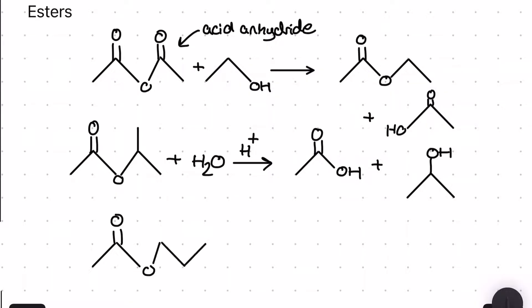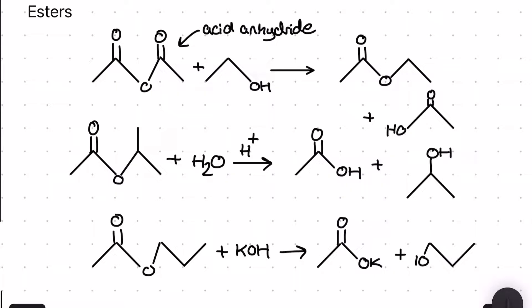For the final ester reaction I'm performing an alkali hydrolysis. Here there's no catalyst, and instead of water the reactant is the alkali itself, reacting with the ester to make a carboxylate salt — for example potassium ethanoate — along with some alcohol.